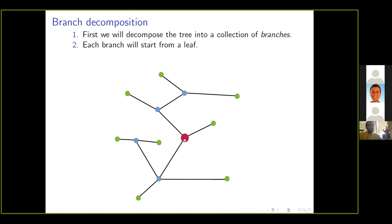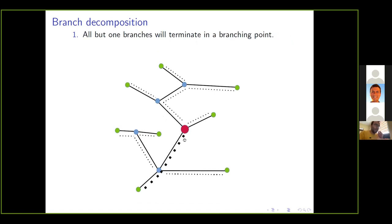Starting from the leaves, there's a unique direction towards the root. Some branches will disappear at a branching point, some will continue. We need a criterion for which branch stops and which continues. That's the TMD decomposition: once a branch stops, there is a branch that continues all the way to the root. We have all this variety of branches and we need a proper definition.